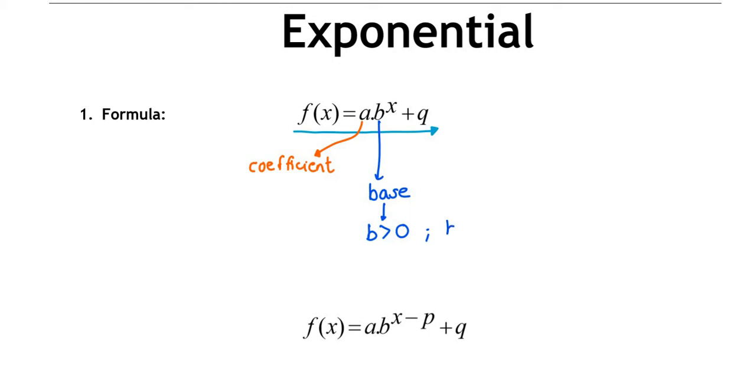We also don't allow a base of 1 when we think of an exponential graph, because 1 to the power of anything is just 1 — so the graph would just stay where it was.